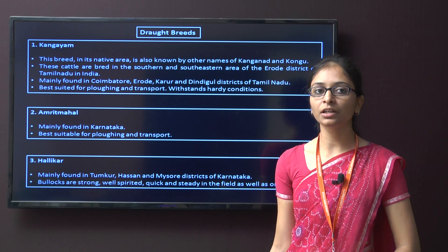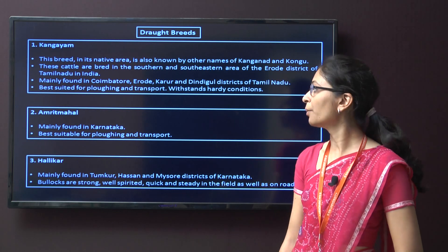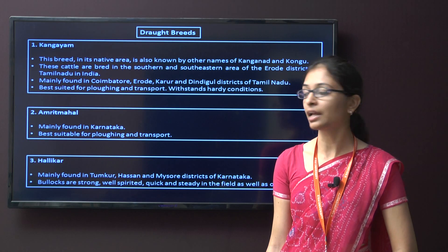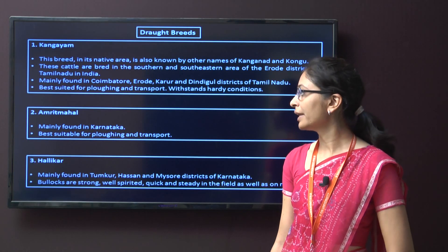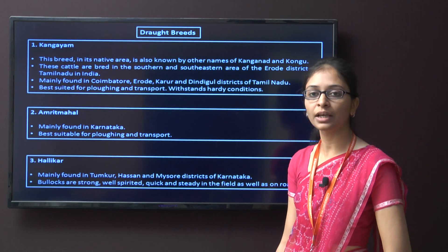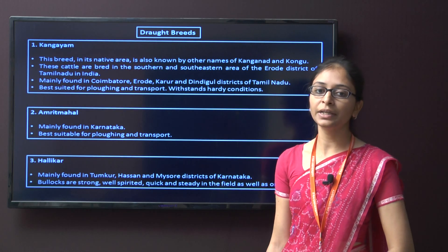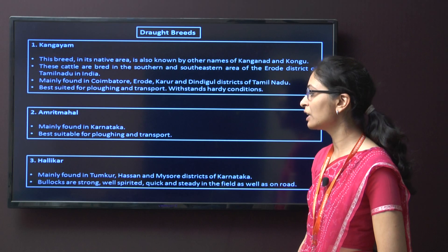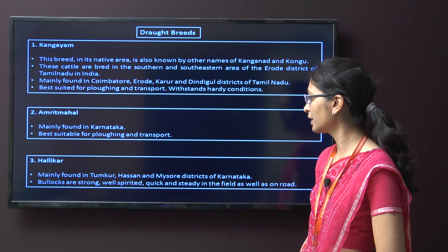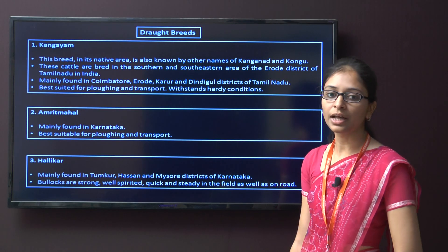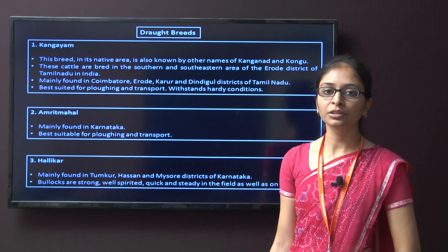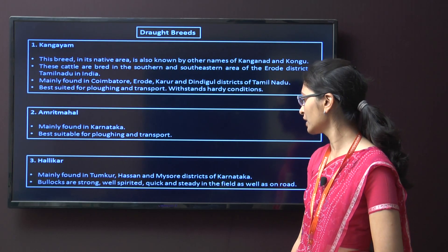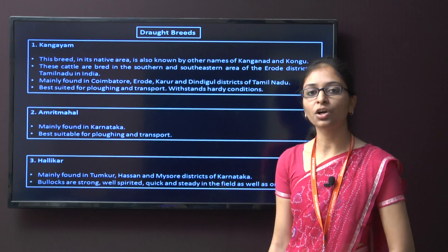The second type under draft breed is Amrit Mahal, mainly found in Karnataka, and best suitable for ploughing and transport. The third draft breed is Helikar, mainly found in Tumkur, Hassan, and Mysore district of Karnataka. The bullocks of these breeds are strong, well-spirited, quick, and steady in the field as well as on the road.